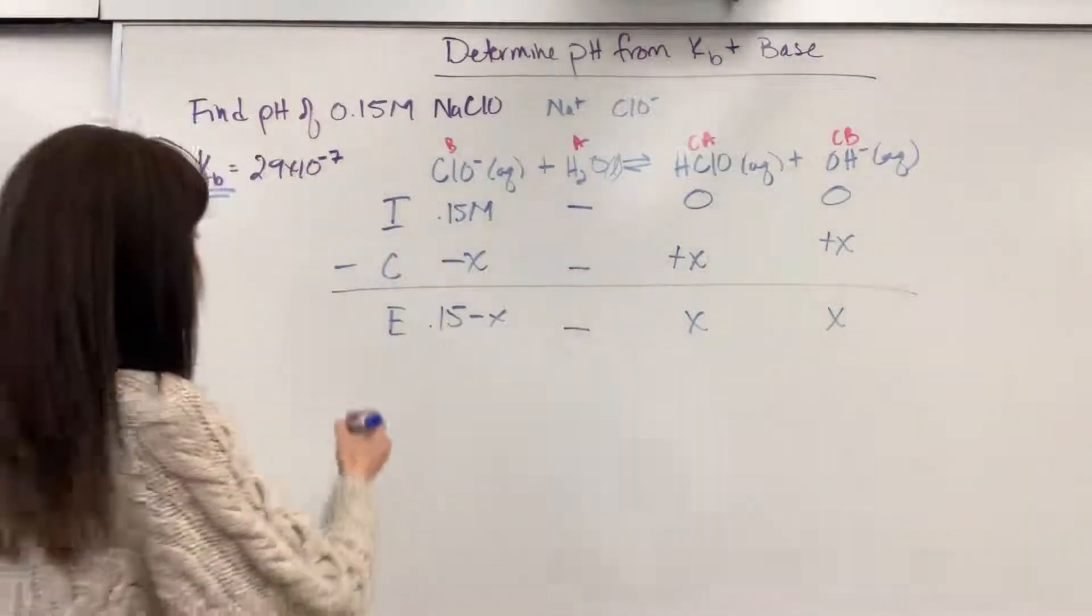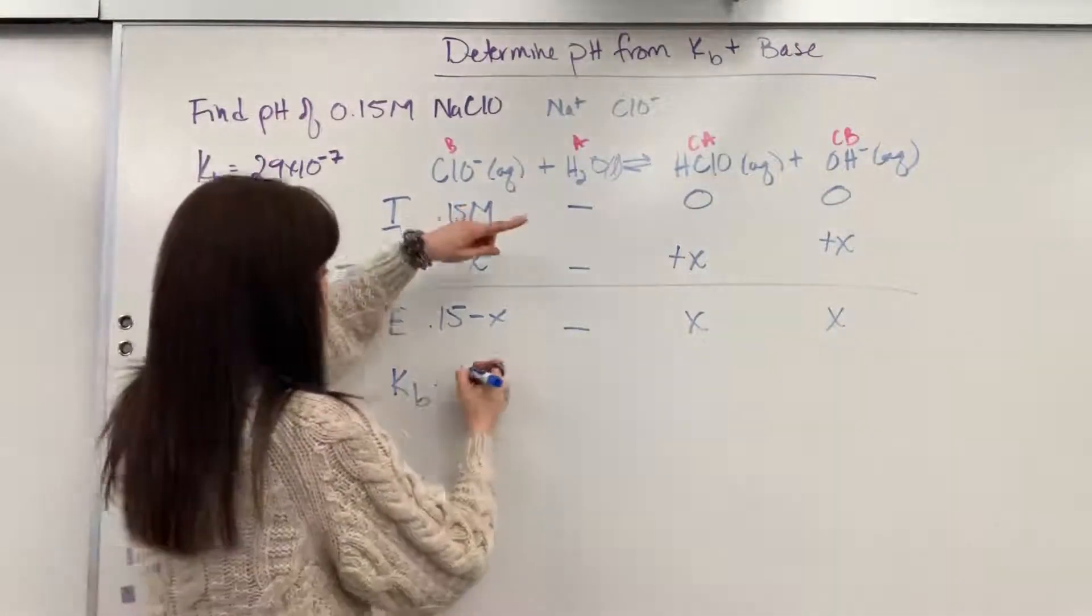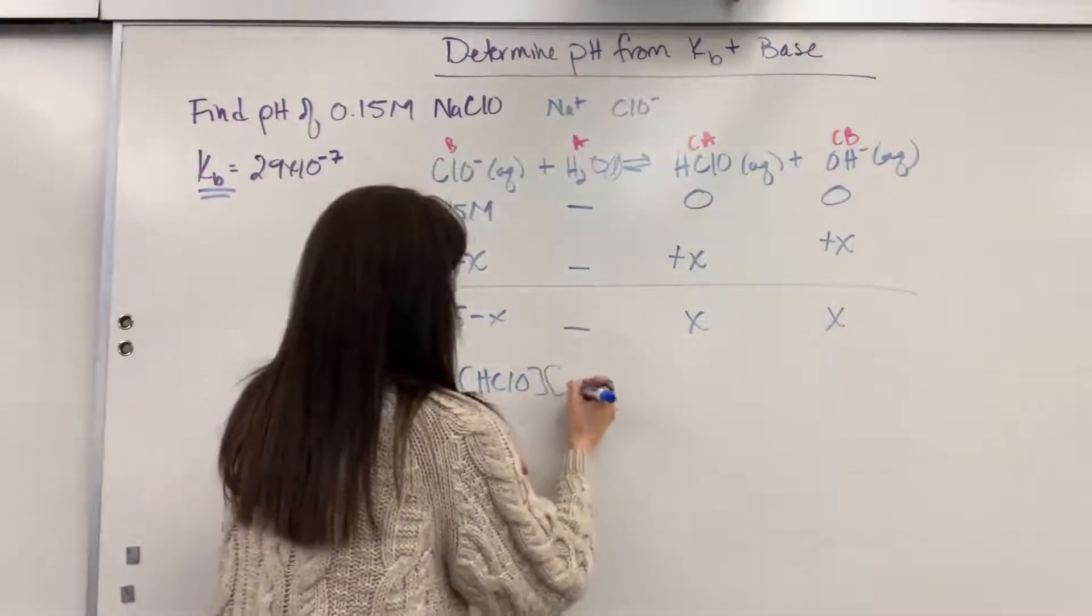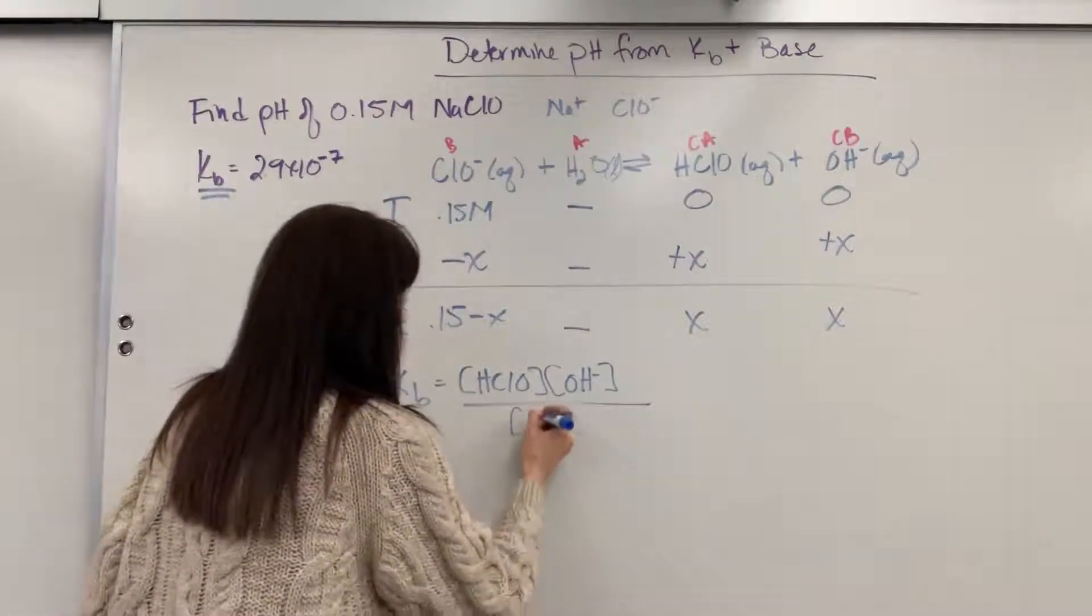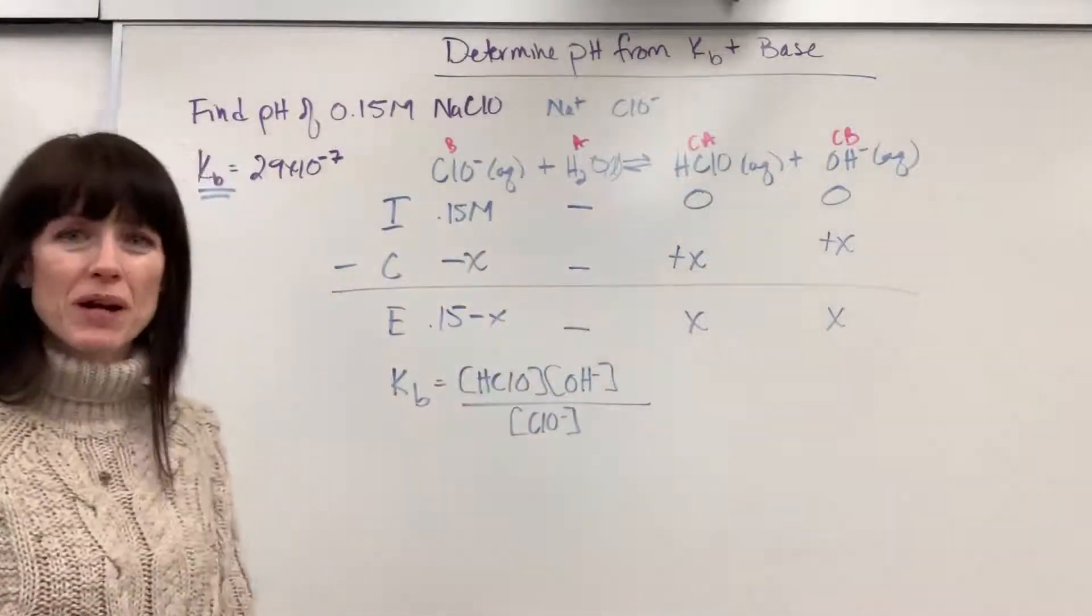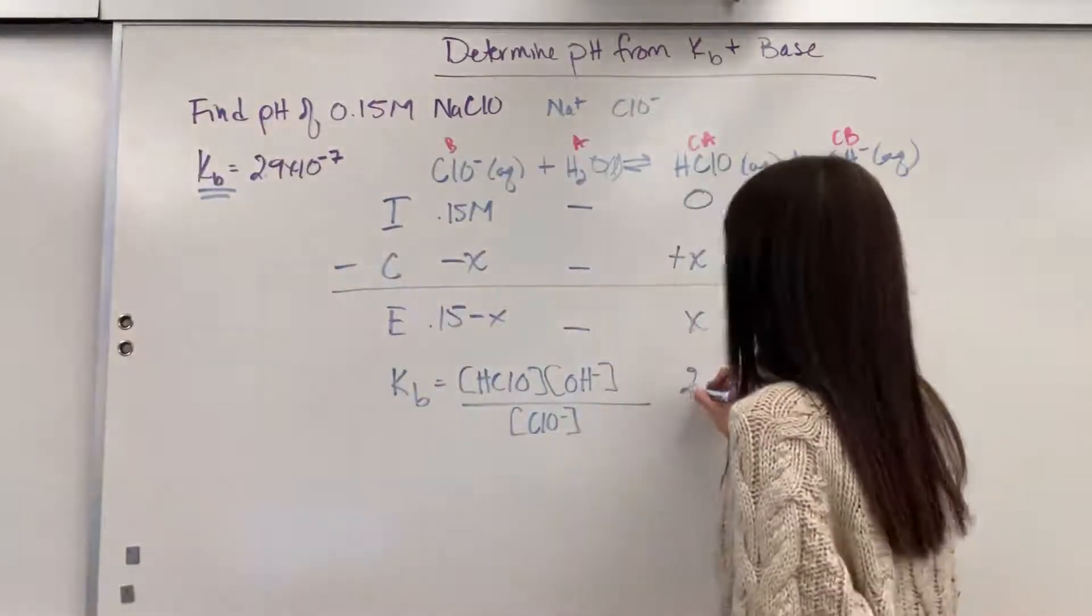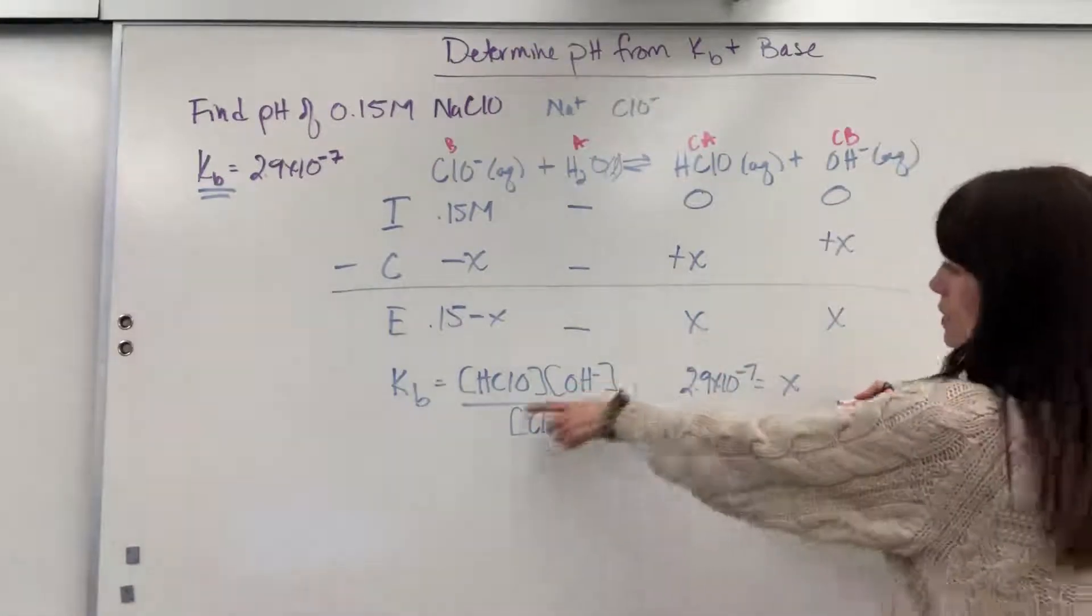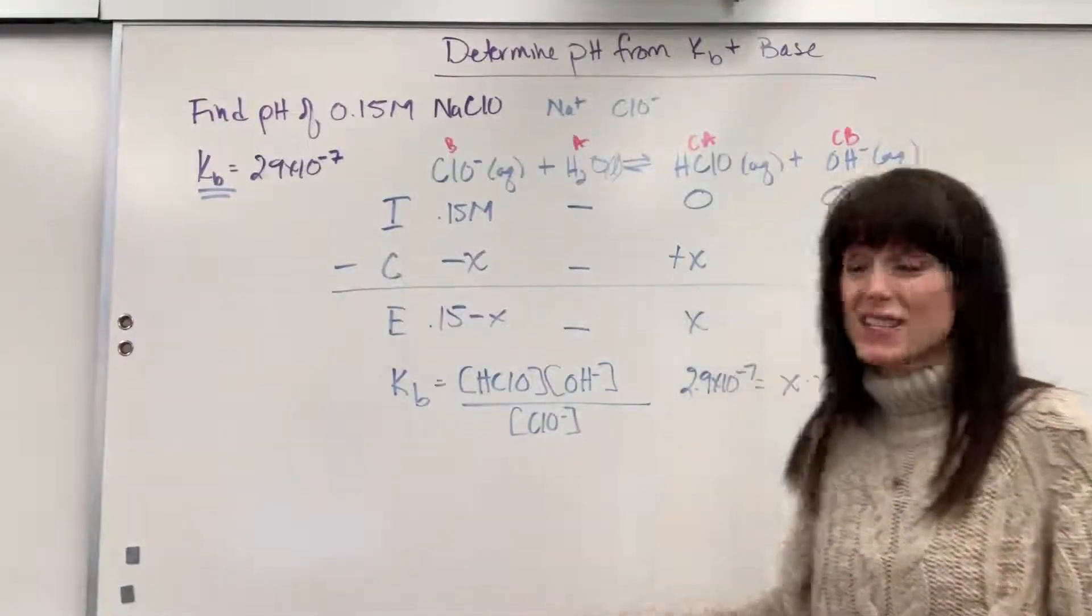Now we can plug this into the equilibrium expression. Kb, because this is a base reaction, is going to equal products. That's my hypochlorous acid times hydroxide, divided by my base, which is the hypochlorite. Water is not going to be a part of that. Let's go ahead and plug in everything we know. Kb is going to be 2.9 times 10 to the minus 7 equals X times X. I'm going to go ahead and multiply that. Let's just write that as X squared divided by 0.15 minus X.